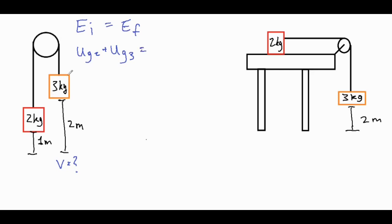Afterwards, once the three kilogram block starts to fall down, both of them move. The three kilogram block reaches the ground so it no longer has gravitational potential energy, but our two kilogram block does have some final gravitational potential energy because it's actually going to be lifted higher off the ground. Now both of them are moving, so we do have kinetic energy for both of them. We'll club that into one big K value — the kinetic energy of the system — using the formulas mgh and one half mv squared, then solve for velocity.